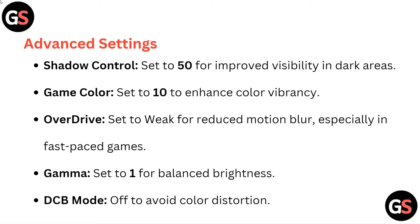Advanced settings: Shadow control set to 50 for improved visibility in dark areas. Game color set to 10 to enhance color vibrancy. Overdrive set to Weak for reduced motion blur, especially in fast-paced games. Gamma set to 1 for balanced brightness. DCB mode Off to avoid color distortion.